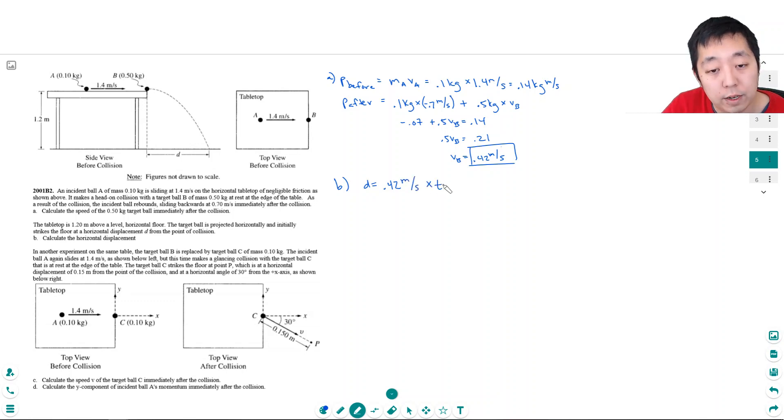In the x direction, it has no acceleration because there's no force acting on it. Time in the air, when you're doing projectile motion, is always based on the vertical distance and vertical motion. I want to look at delta x equals v naught t plus one half at squared. This is my kinematic equation for displacement. In the vertical, it's going to move a distance of 1.2 meters.